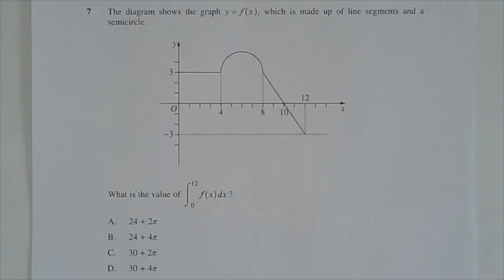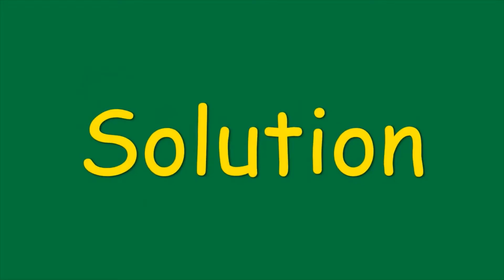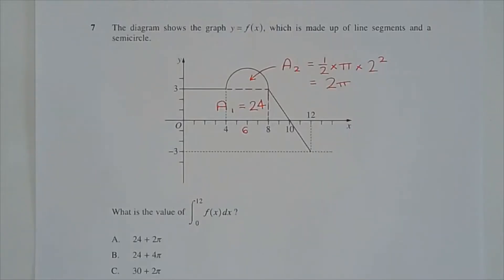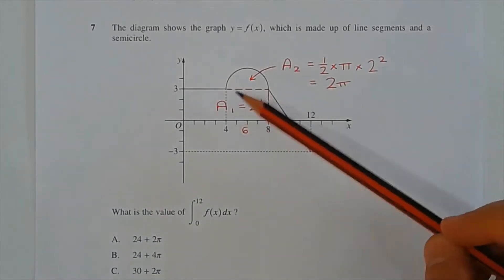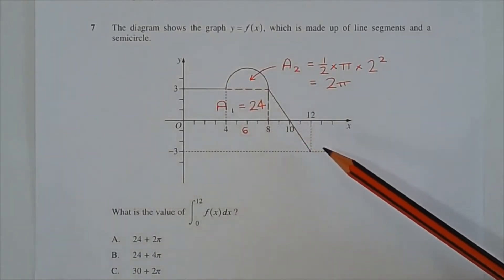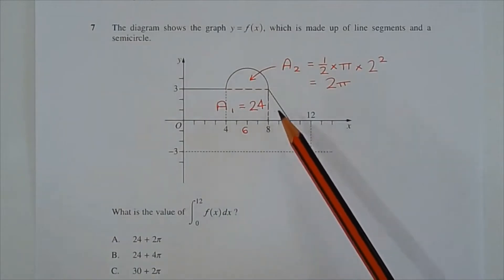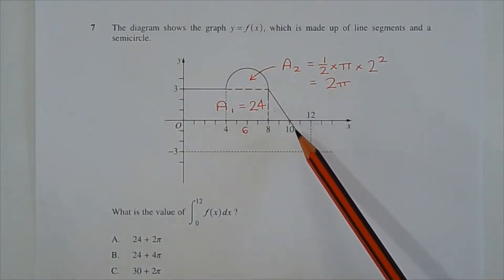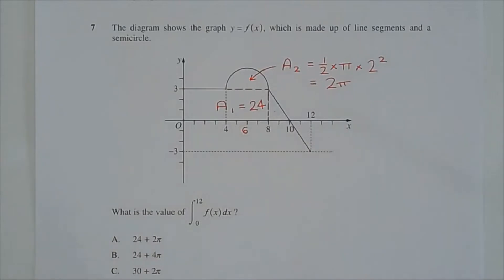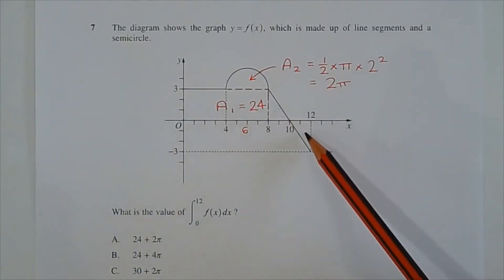Question 7. The diagram shows the graph of y equals f(x), made up of line segments and a semicircle. What is the value of the integral from 0 to 12 of f(x) dx? The question asks for the value of a definite integral, not the area bounded between the curve and the x-axis, so we must account for positive and negative areas. This positive area here cancels with this negative area here.